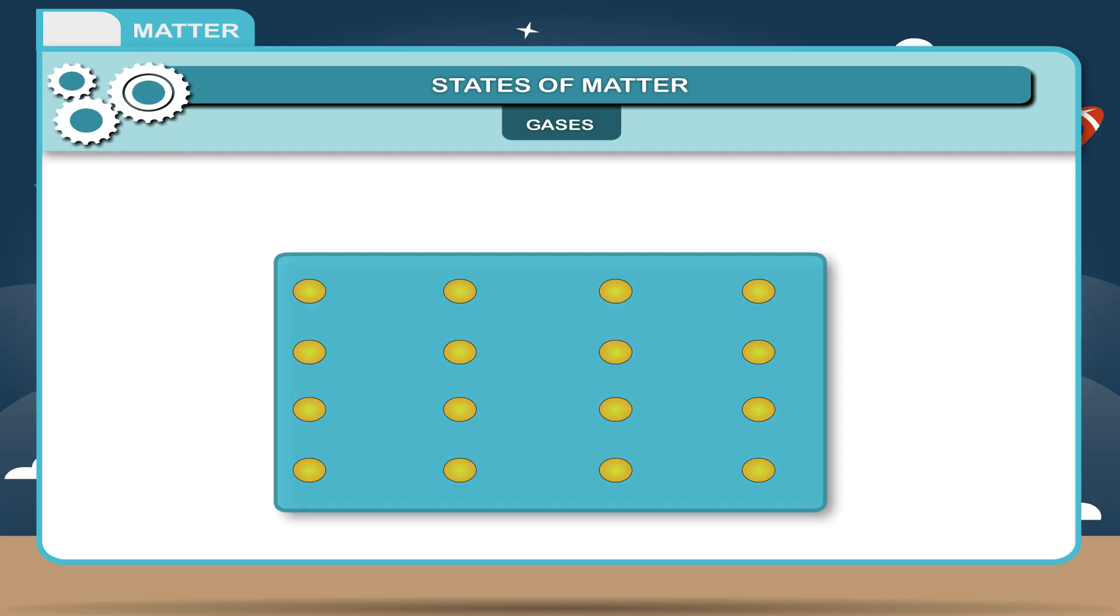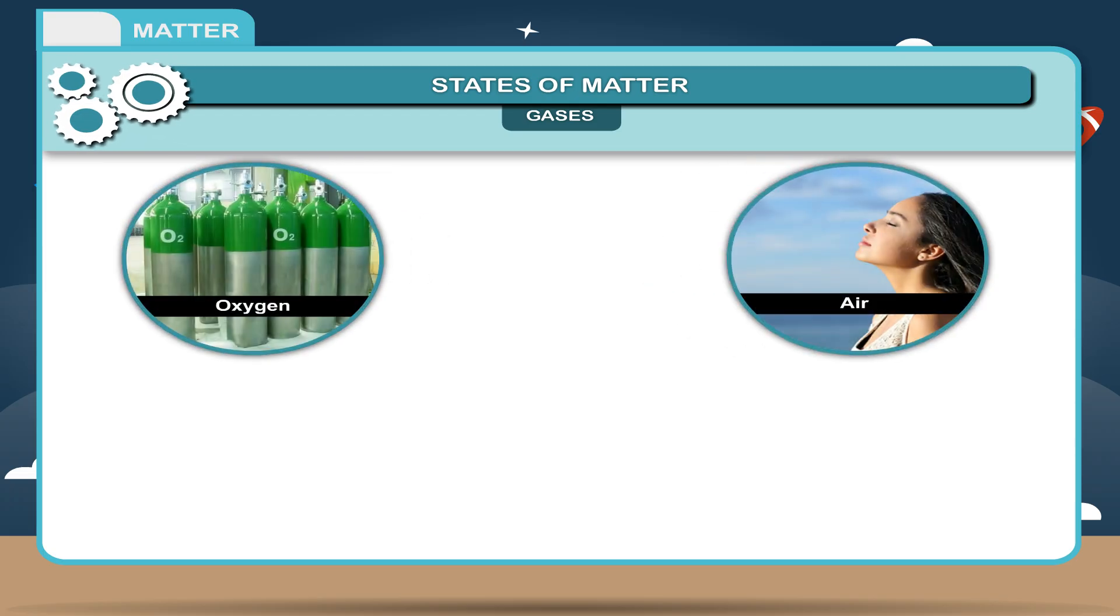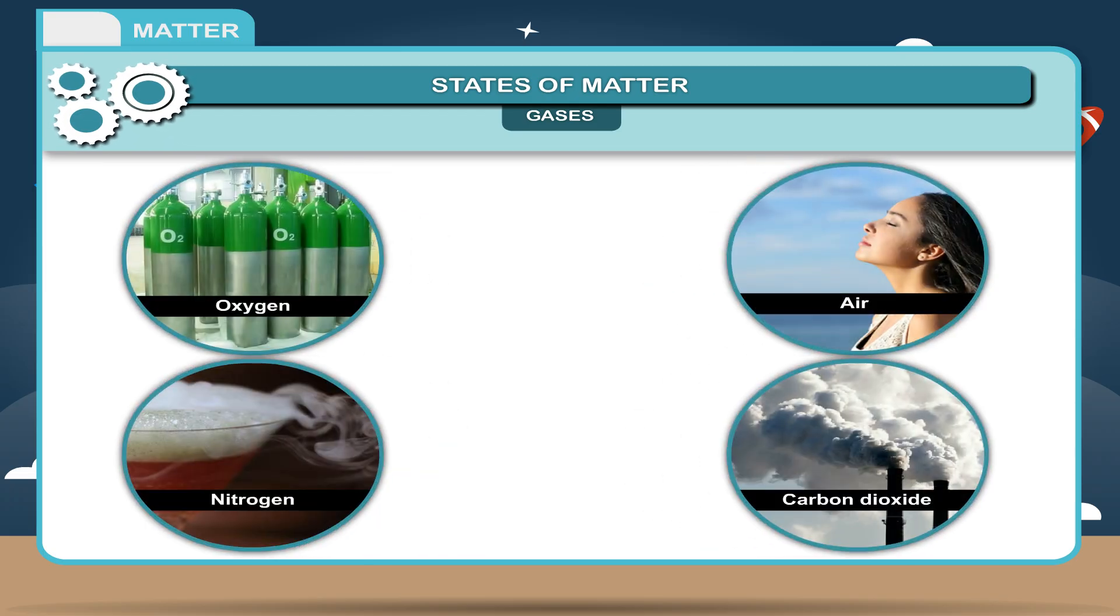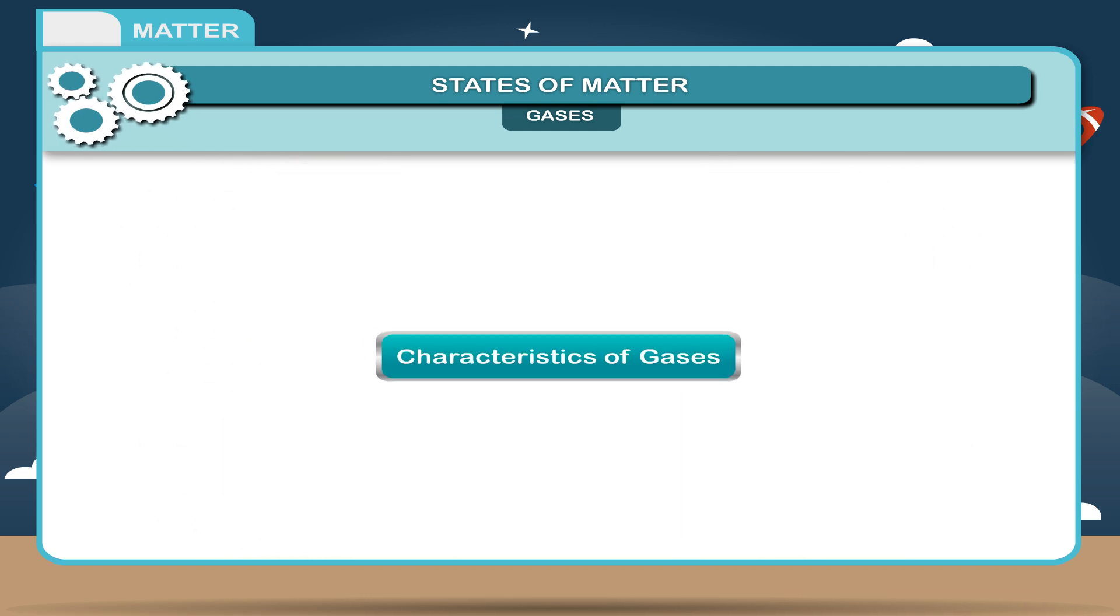Gases do not have any definite shape and occupy any space available to them. The molecules of gases show very little attraction between them. Examples: oxygen, air, nitrogen, carbon dioxide, etc.